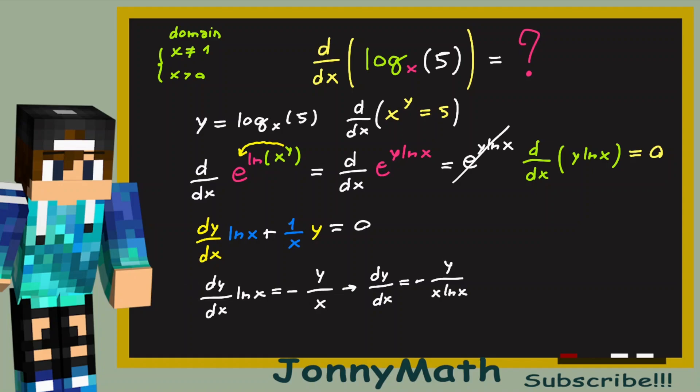But now, what is y equal to? Y is our function. So it is log in base x of 5. So this equals to minus log in base x of 5 divided by x times the natural log of x. And we are done.